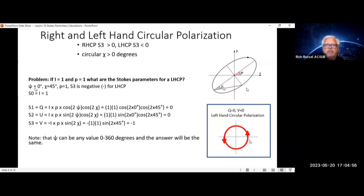Let's look at a problem. Psi equals 0 degrees, Chi equals 45 degrees. Now note, if it's 45 degrees, then this entire thing is 90, and this is now a circle. P equals 1, S3 is negative. If it's negative, that means it's left-hand circular polarized.